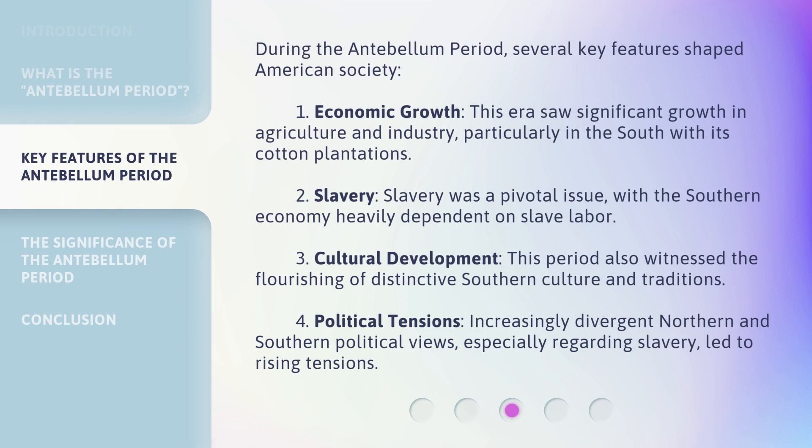During the Antebellum Period, several key features shaped American society. First, Economic Growth: this era saw significant growth in agriculture and industry, particularly in the South with its cotton plantations. Second, Slavery: slavery was a pivotal issue, with the Southern economy heavily dependent on slave labor.